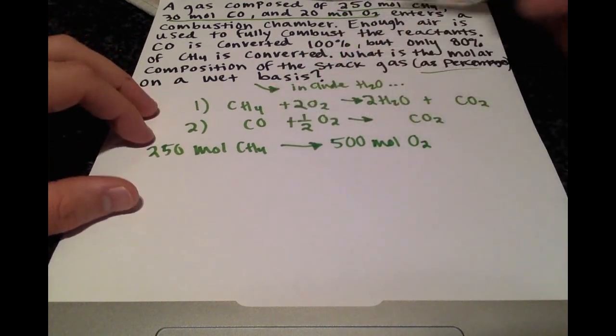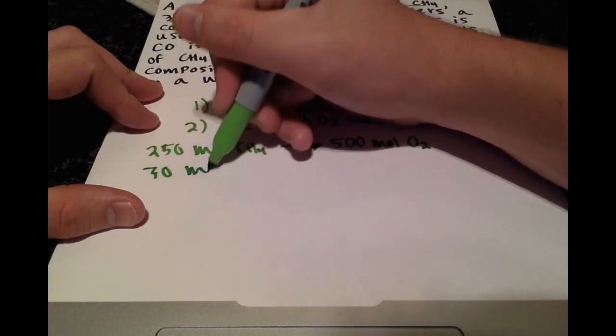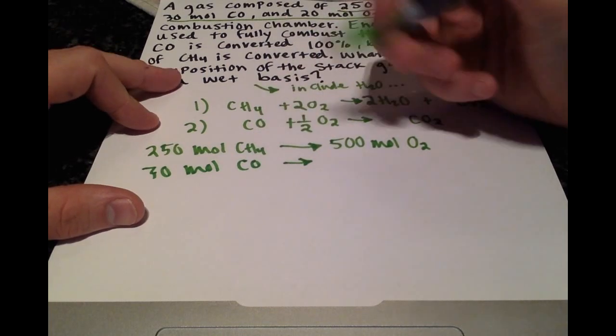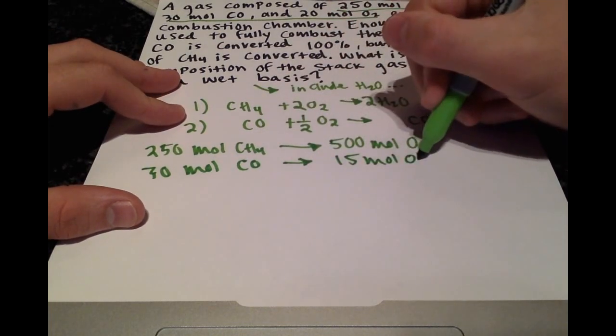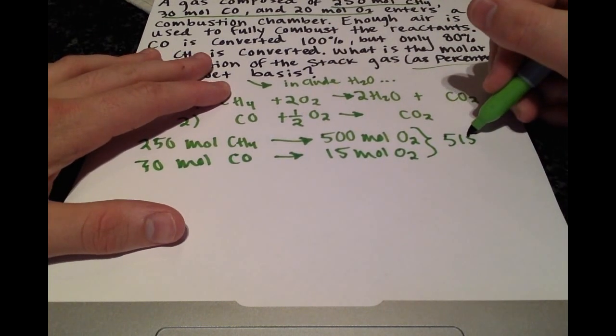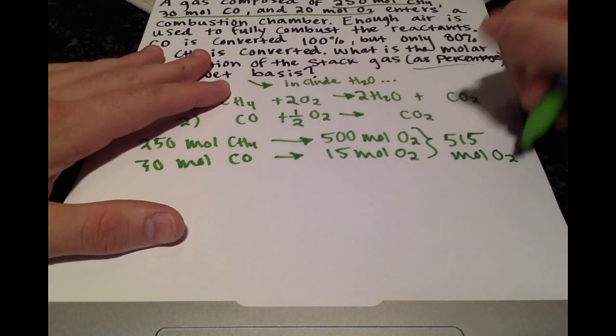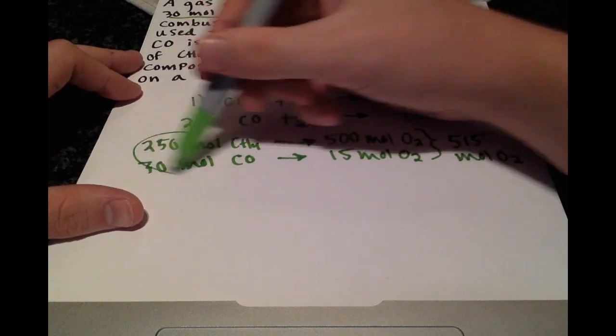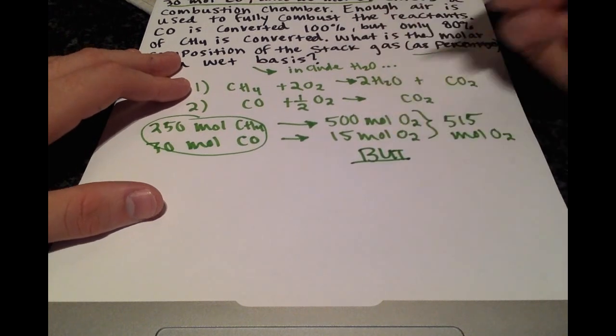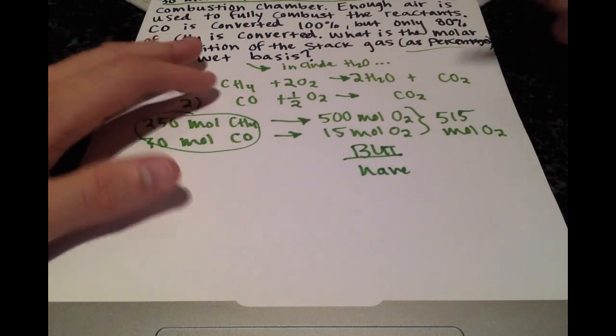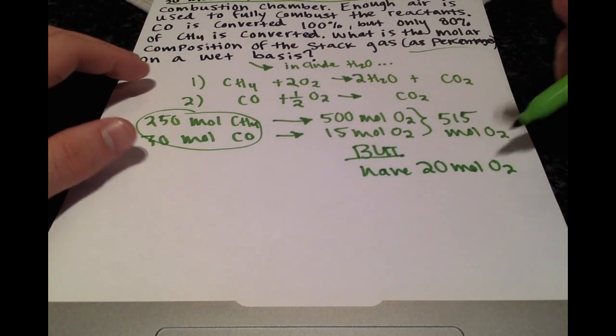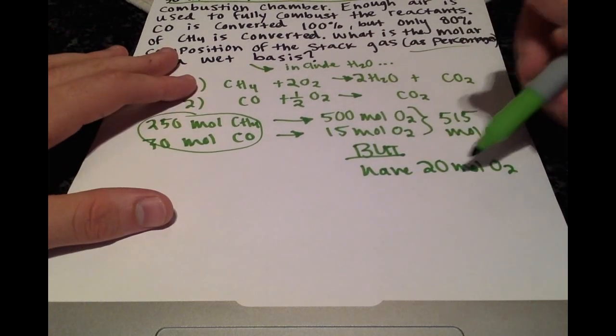To fully combust the 30 moles of CO we need half the number of moles, so that's just 15 moles of O2. We need 515 moles of O2 to fully combust these two reactants. But we have 20 moles of O2 also in this stream entering the combustion chamber. Do not forget this important detail.